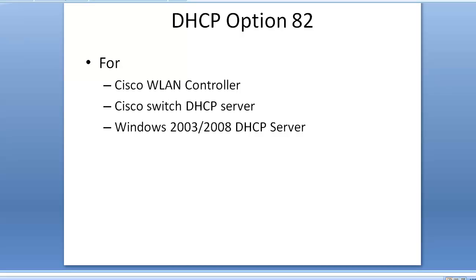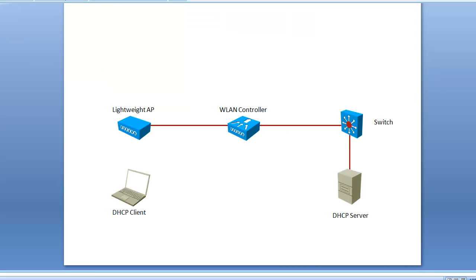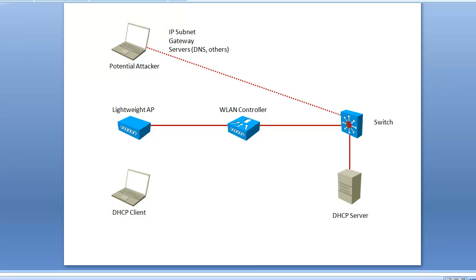First, what is option 82? By default, the DHCP service is unsecured — any client can get an IP address from any server. You just need to have your clients on the right subnets sending a DHCP request, and any available server in that subnet is going to provide an IP address. This is insecure: any potential attacker can get an IP address from your DHCP server and gain valuable information about your network, such as the IP subnet, the gateway, DNS servers, and other options.